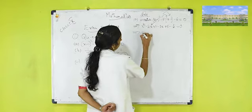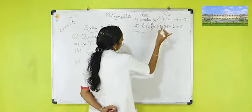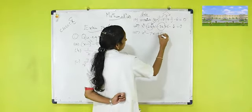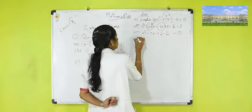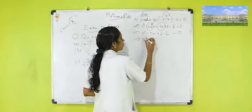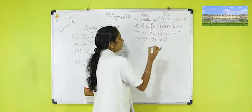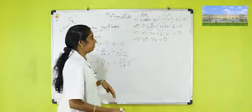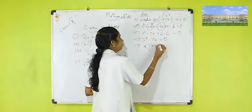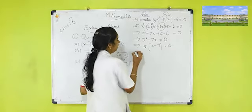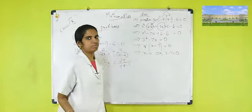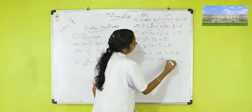Simplifying: combining −2x and −5x gives −7x, and 1 + 5 − 6 = 0. So the equation becomes x² − 7x = 0. Factoring: x(x − 7) = 0. This implies x = 0 or x − 7 = 0, giving the two roots x = 0 or x = 7.